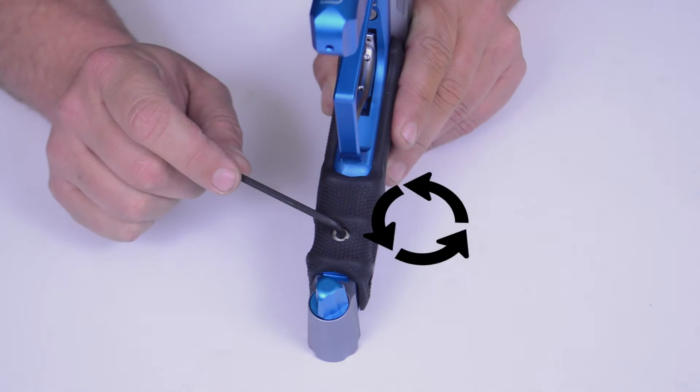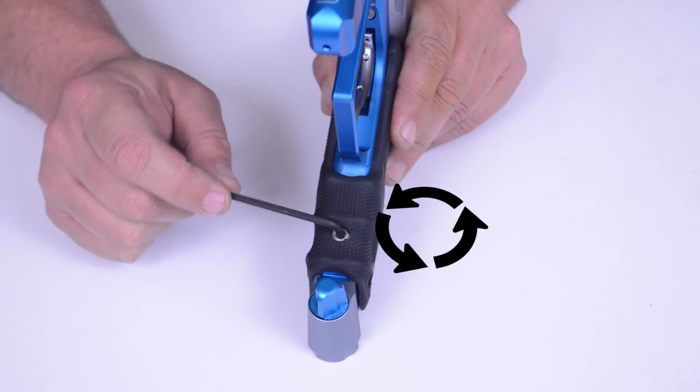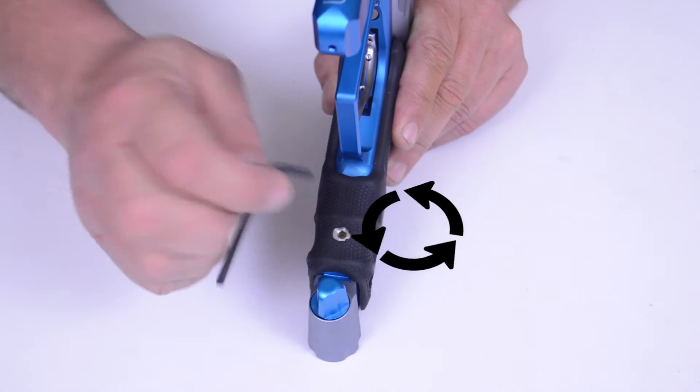To increase your velocity, rotate the key counter-clockwise, moving it out while shooting over the chronograph until your velocity is where you want it.